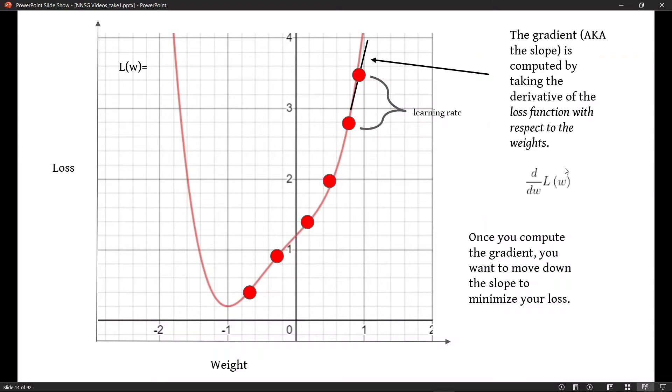What actually happens is you compute the gradient at that point. In other words, you compute the slope at that point. And since your goal is to go to the local minimum where the loss on the y-axis is minimized, then you want to move down the slope. So in this case, you want to move in the downward direction by one unit.